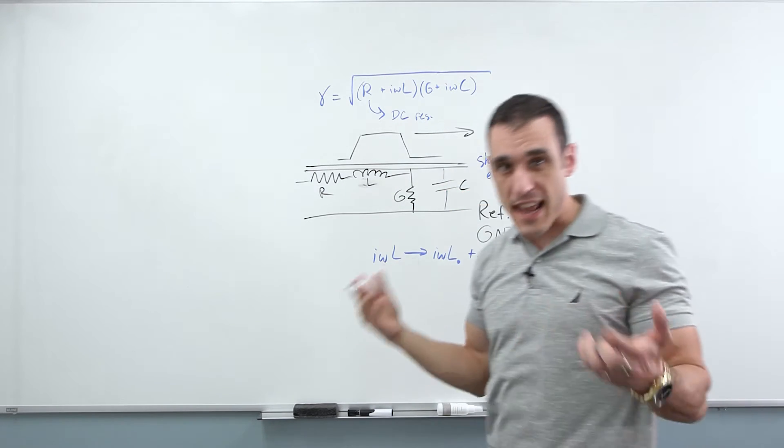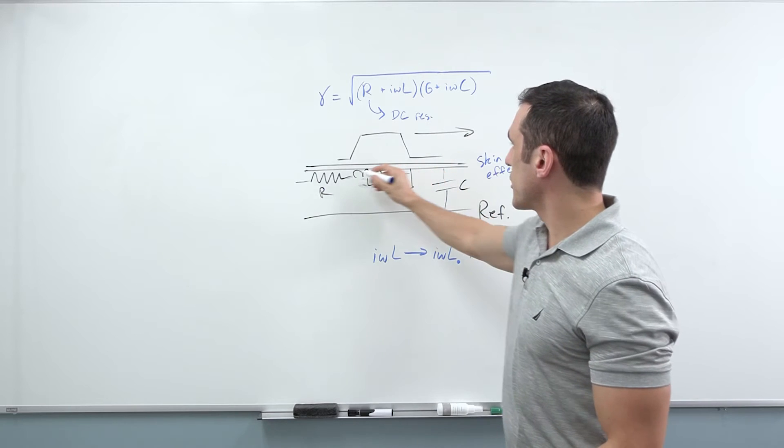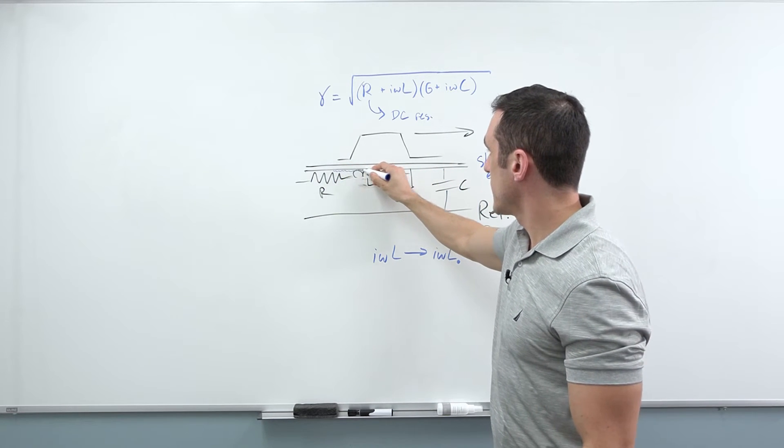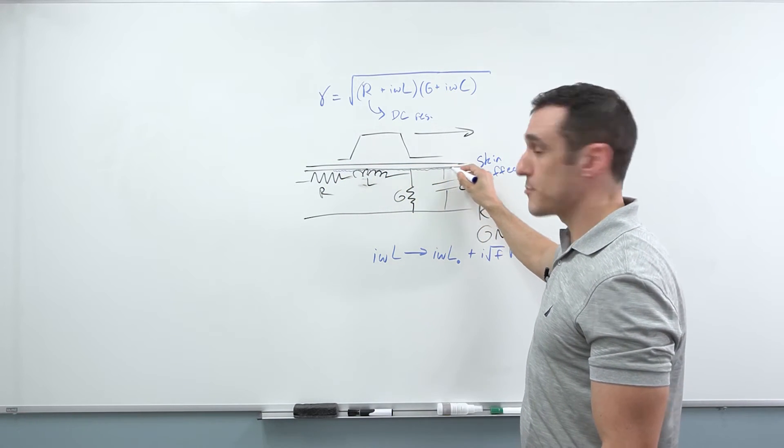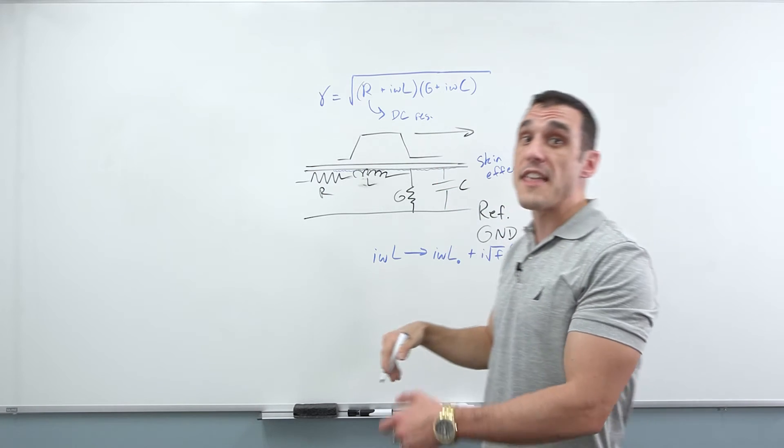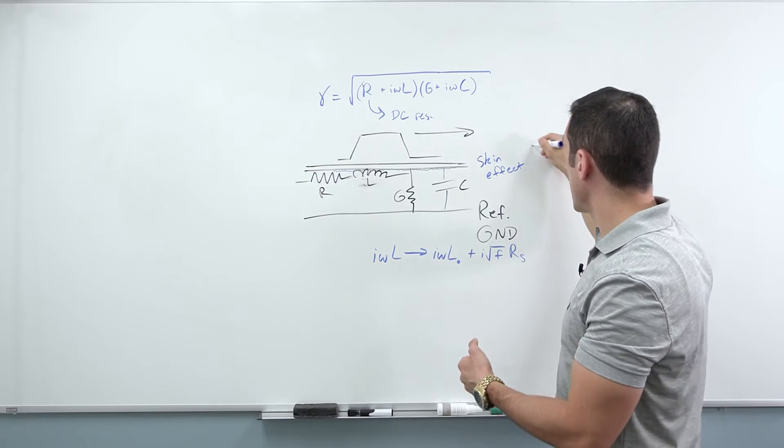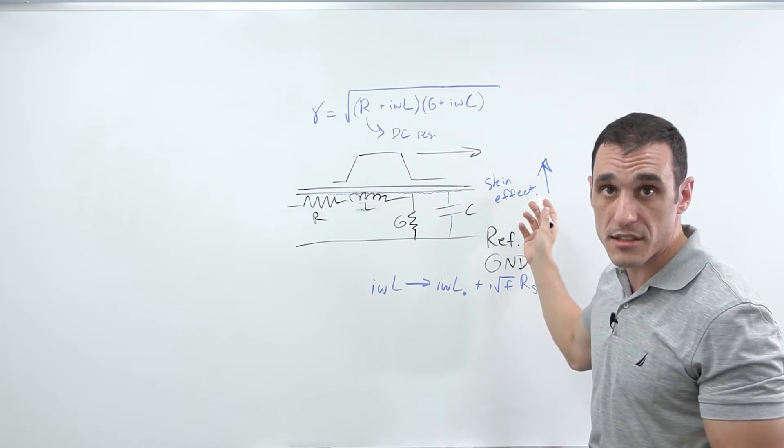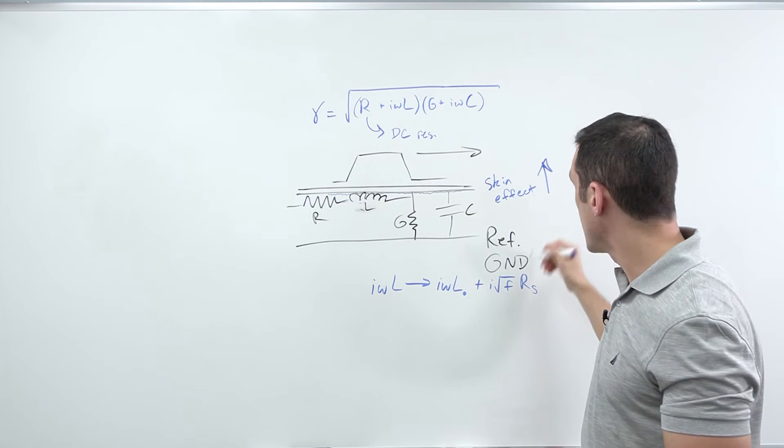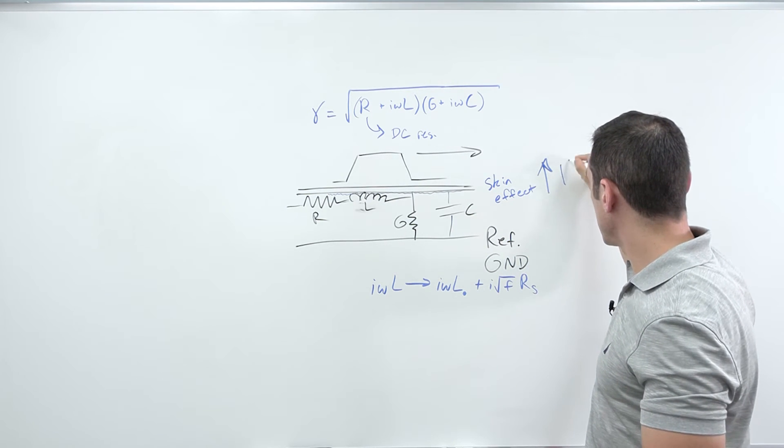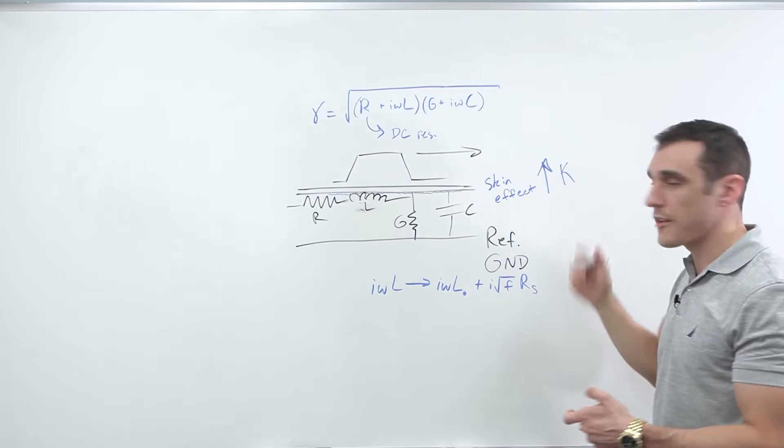Now, when you're dealing with a trace on a PCB, it's not just the skin effect. The skin effect actually gets enhanced because here along this bottom surface, this trace is not perfectly smooth. It's actually rough. And that roughness essentially increases the additional impedance that's generated by the skin effect.